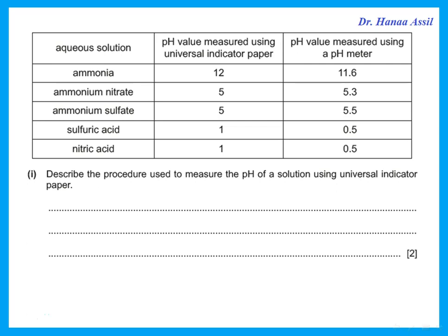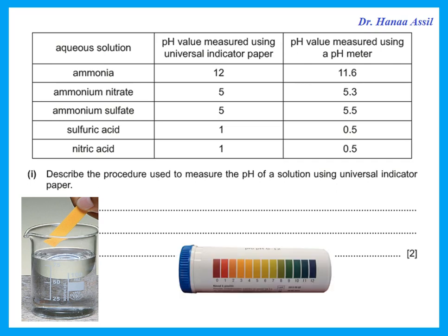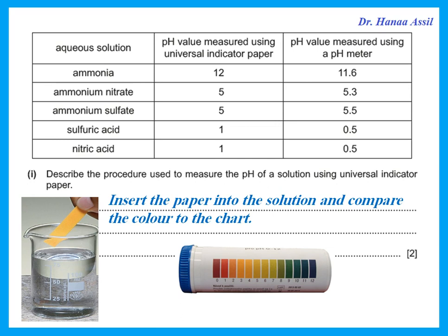Describe the procedure used to measure the pH of a solution using universal indicator paper. Insert the paper into the solution and then compare the color to the chart, which shows colors corresponding to pH 1, pH 5, pH 12, and so on.